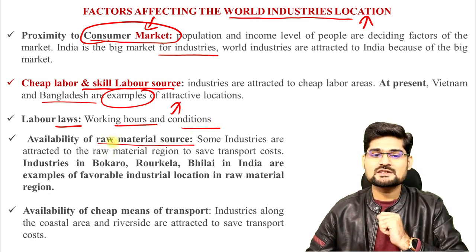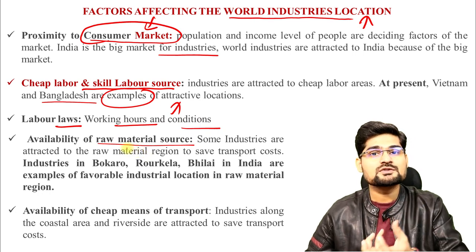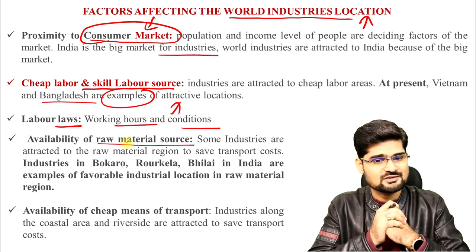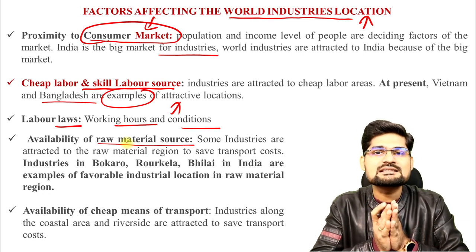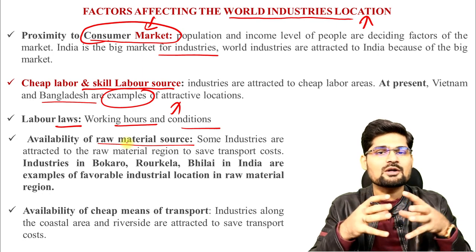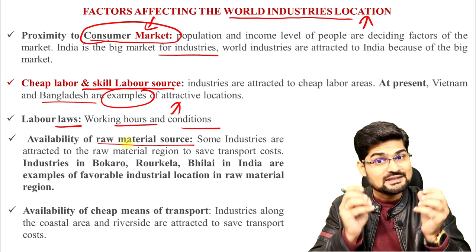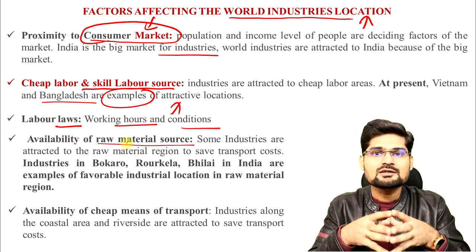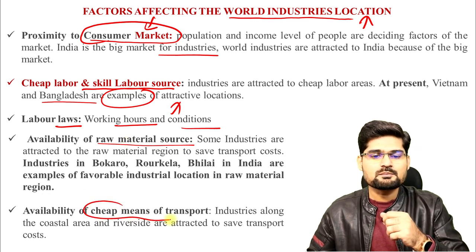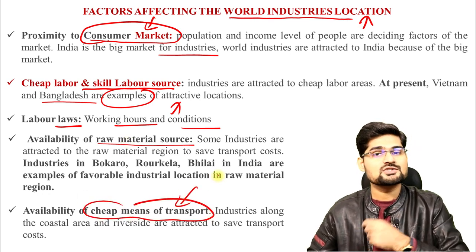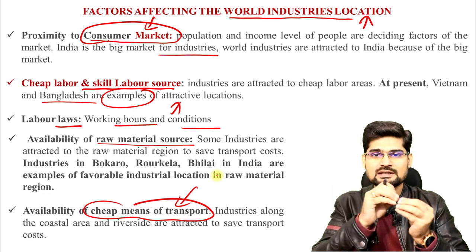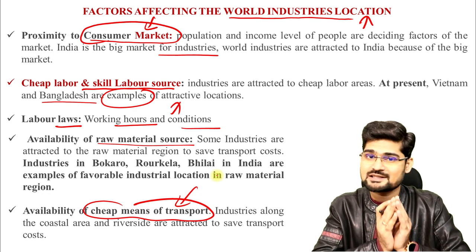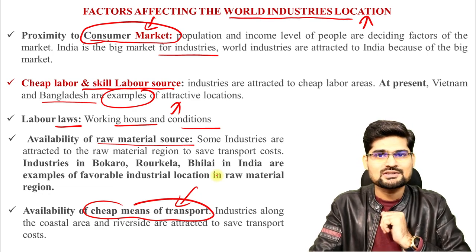Availability of raw material sources is obviously very important because input is needed to produce. Raw materials are critical in industry establishment — for example, iron and steel cities in India are mostly concentrated in the mineral belt, where iron ore is the determinant factor. Availability of cheap means of transport is also crucial, as transportation carries input linkages to the industry and the produce to the market, making it the lifeline of industrial setups, as discussed in Weber's industrial location theory.